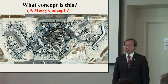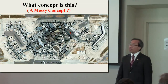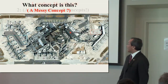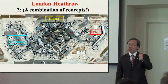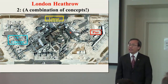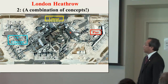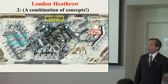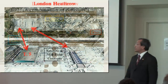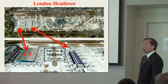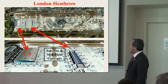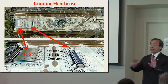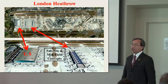What concept is this? This is what I call a messy concept. Actually, this is Heathrow International. It is a combination of a lot of concepts: the wide concept, the pier concept, and the linear concept. In addition, they have the terminal and midfield concepts — Terminal 5 is totally away as an independent terminal from the main terminal.